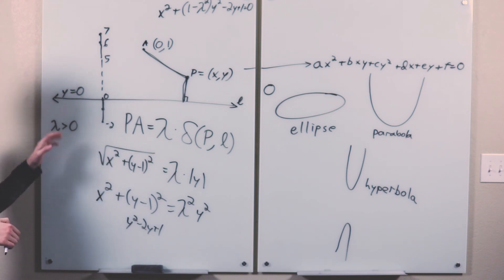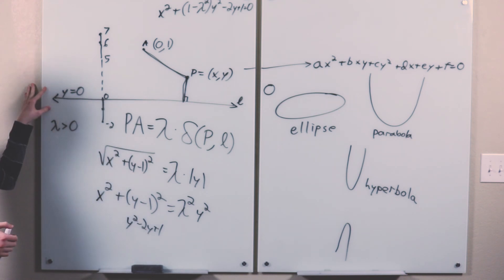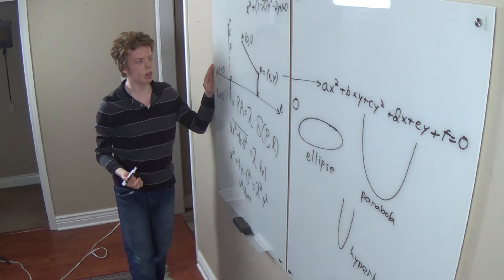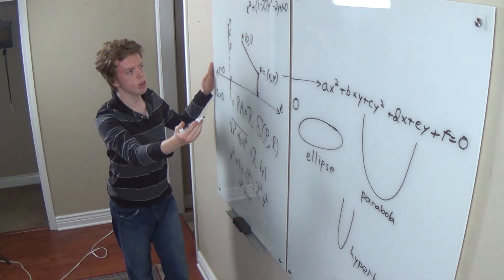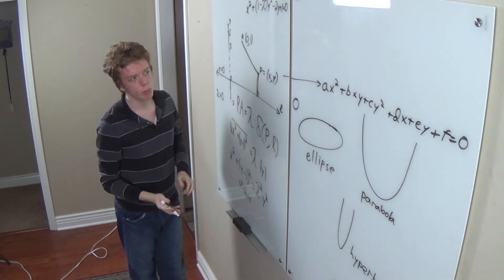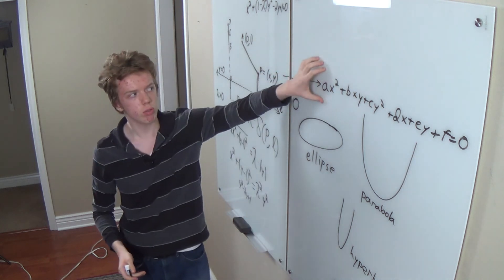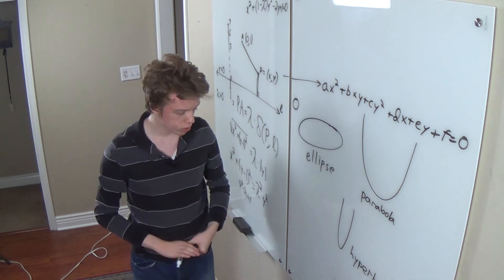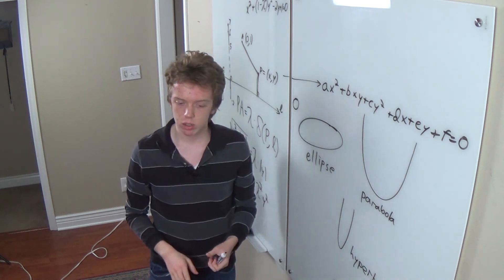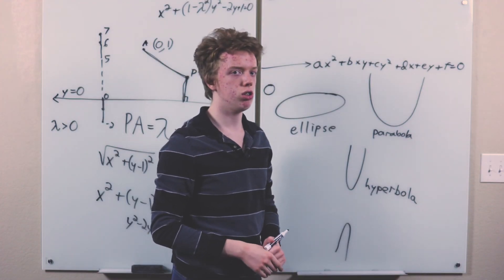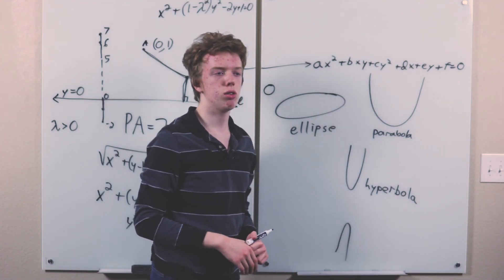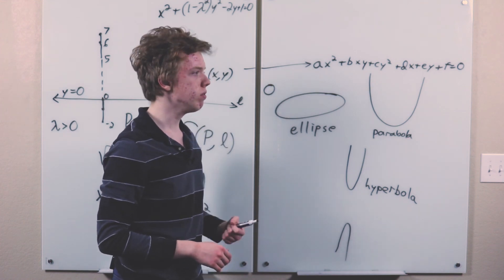So we see that all these loci are of this degree 2 curve form, which will be most useful for us from now on. But we still haven't really probed all the interconnections between these three definitions. And I still haven't gotten to some of the most interesting properties of these curves.